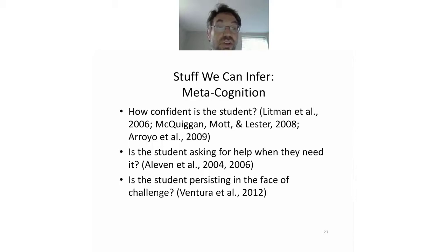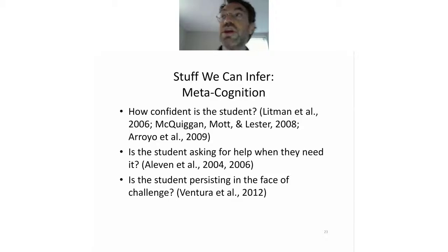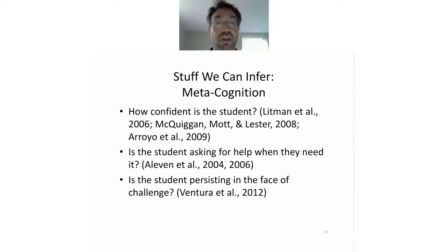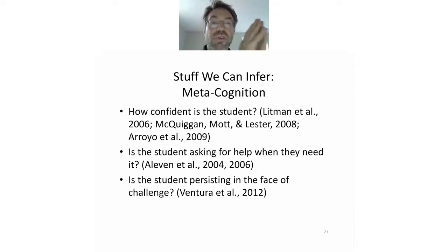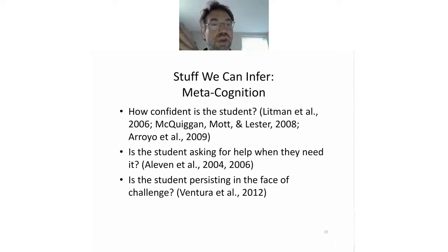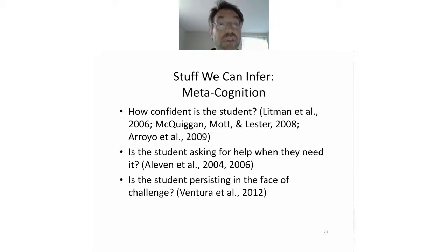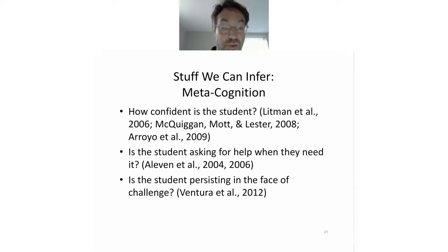Metacognition. Increasingly, e-learning systems can infer things like: is the student confident? Does the student ask for help when they need it? Learning when to ask for help and when it's useful is really essential. Is the student persisting in the face of challenge? We don't want a student to persist indefinitely making no progress, but we also don't want to develop somebody who never tries when they hit the first roadblock. So there's this fine ground of catching productive persistence and differentiating it from unproductive persistence, and there's been a lot of progress in that in the last few years.